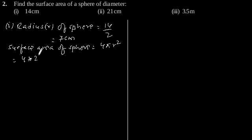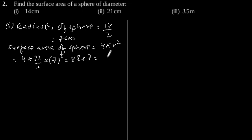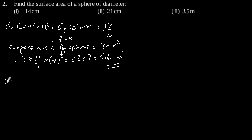4 into 22/7 into 7², this is equal to 88 into 7, which is equal to 616 cm². So the surface area of a sphere having diameter 14 cm is 616 cm².